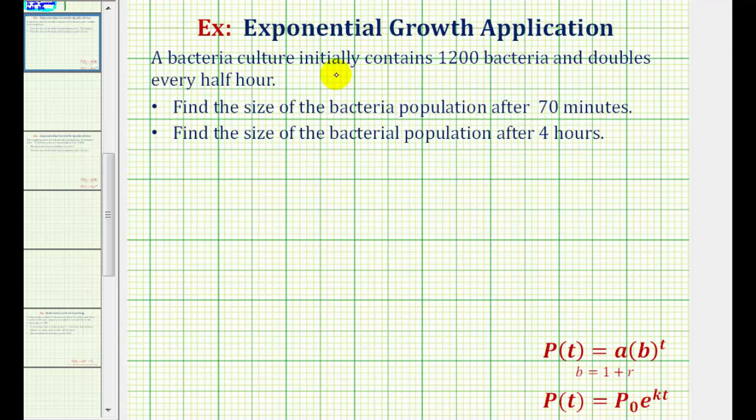A bacteria culture initially contains 1,200 bacteria and doubles every half hour. We want to find the size of the bacteria population after 70 minutes and after 4 hours.